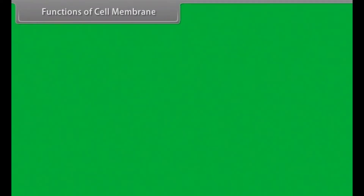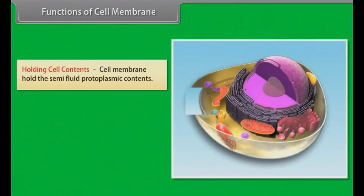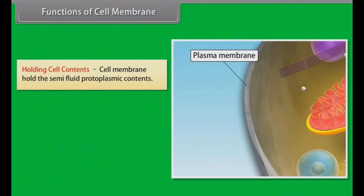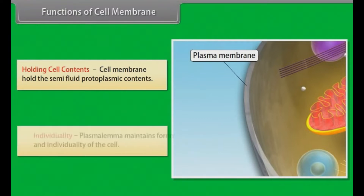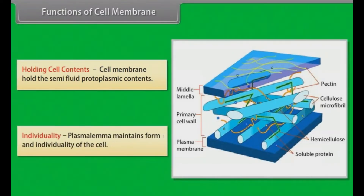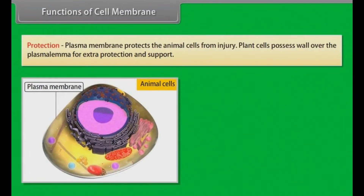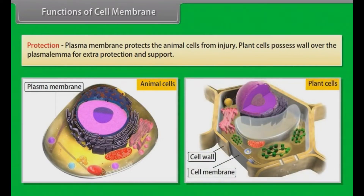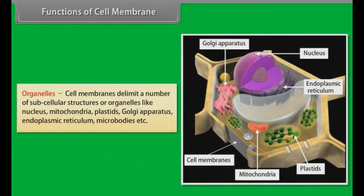Functions of cell membrane. Holding cell contents: the cell membrane holds the semi-fluid protoplasmic contents. Individuality: plasmalemma maintains the form and individuality of the cell. Protection: plasma membrane protects animal cells from injury; plant cells possess a wall over the plasmalemma for extra protection and support. Organelles: cell membranes delimit a number of subcellular structures or organelles like nucleus, mitochondria, plastids, Golgi apparatus, endoplasmic reticulum, microbodies, etc.